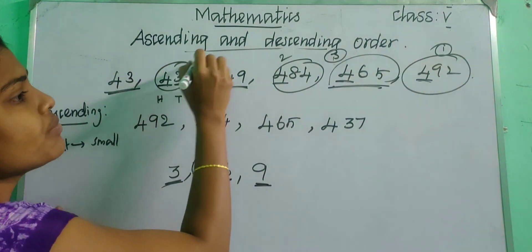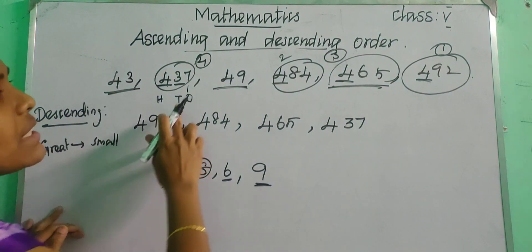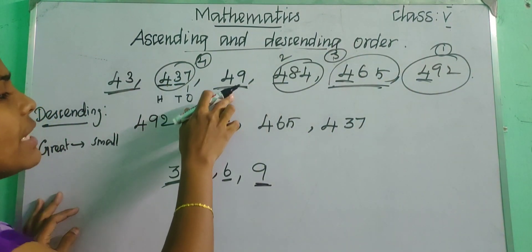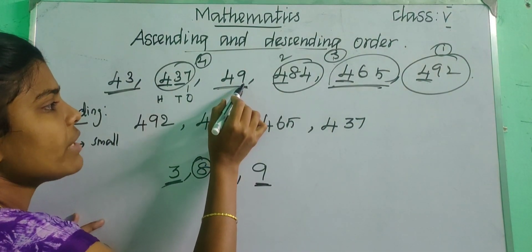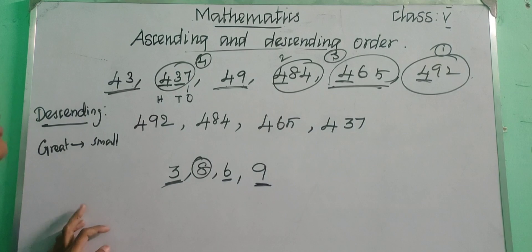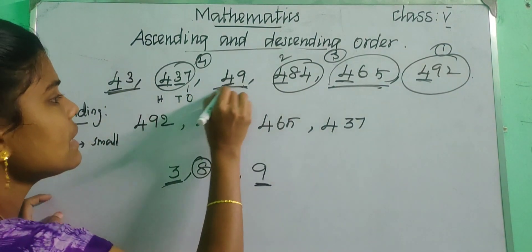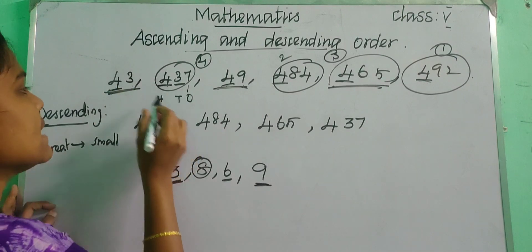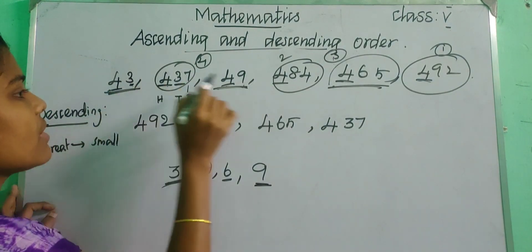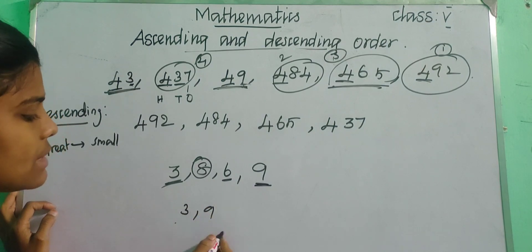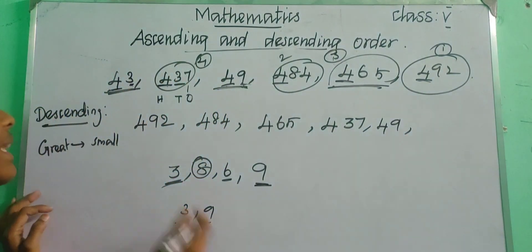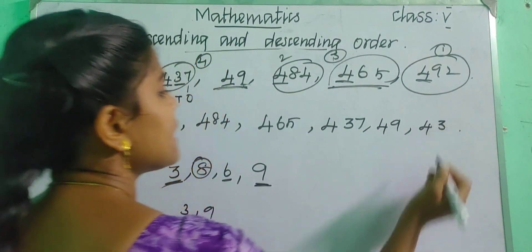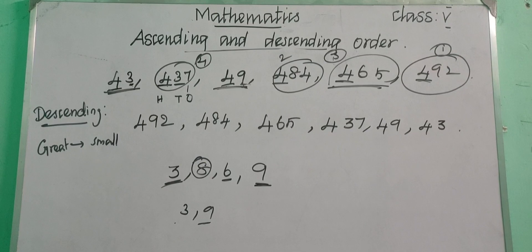We have completed all the three-digit numbers. Now we need to find the greatest among the two-digit numbers. In the two-digit numbers, check the tens place first: both have 4. So check the ones place — 43 has 3 and 49 has 9. Nine is greater, so 49 is the next greatest. Then 43 is the last in descending order — the smallest number.